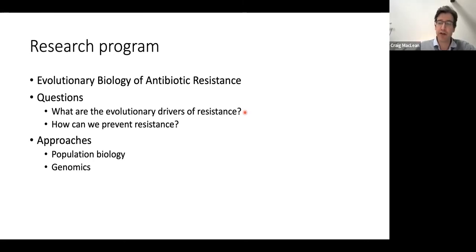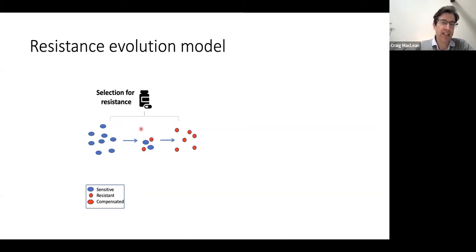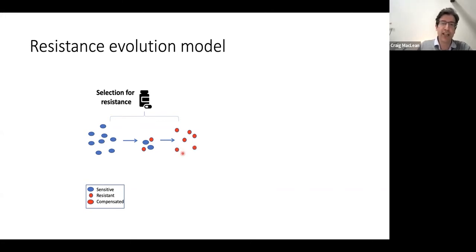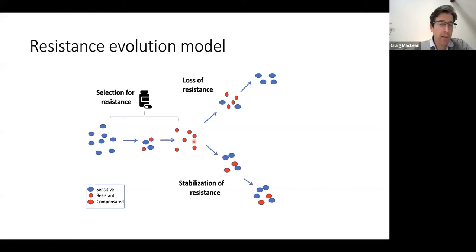I'll start with a simple cartoon model of how evolutionary biologists think about resistance. A sensitive population is treated with antibiotics, and there is then selection for rare resistant variants. Resistance comes at fitness costs — reduced competitive ability, reduced growth — which is why I've shown the resistant bacteria as smaller. Because of these costs it's hard to understand how resistance can persist long term, since antibiotic exposure is really very transient over evolutionary history. One key insight has been that bacteria can evolve compensatory adaptations.